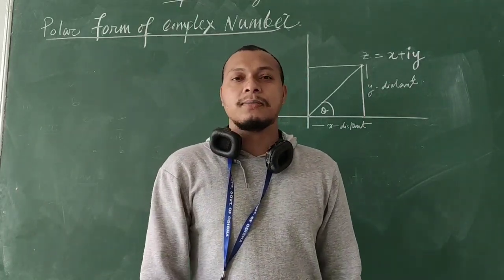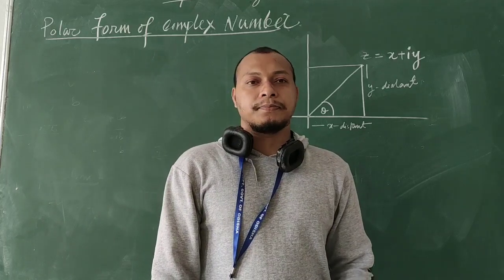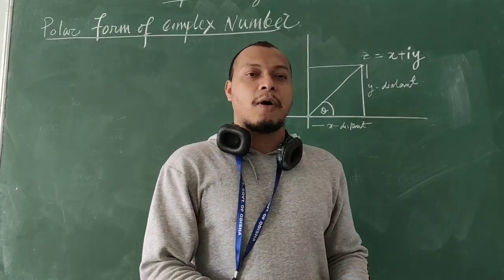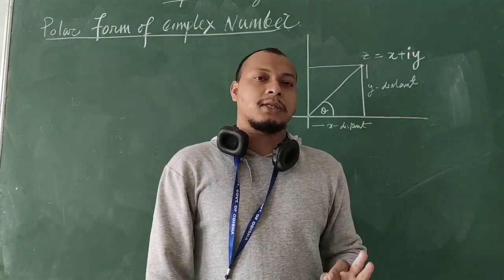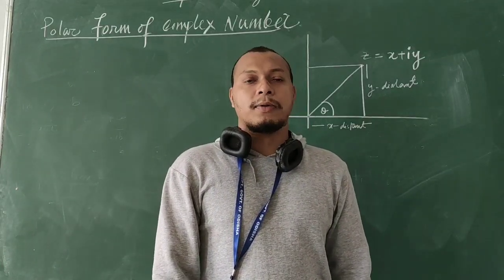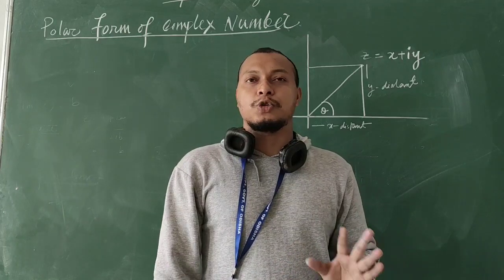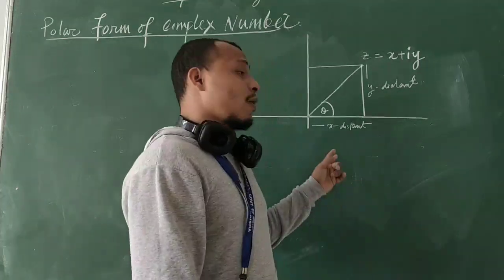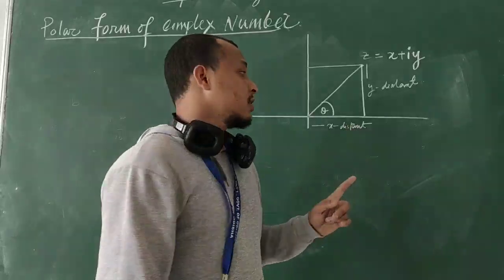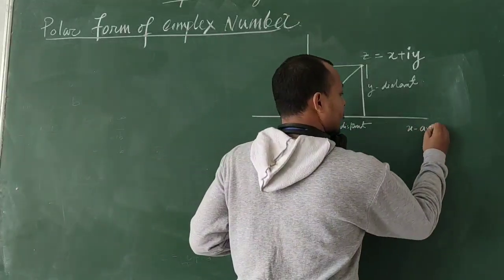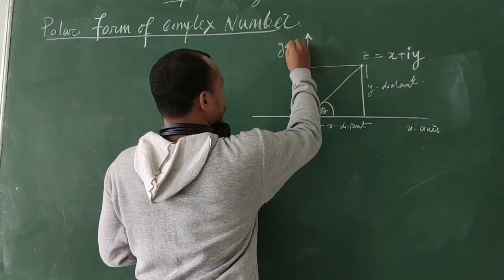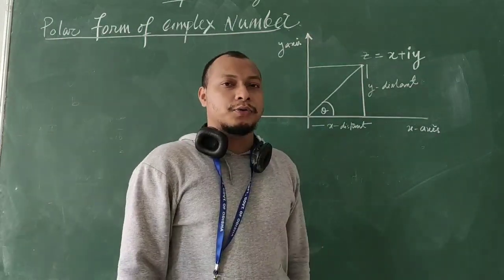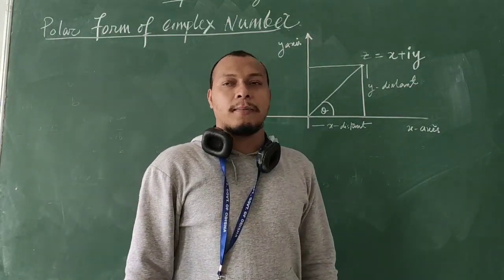In the last class we studied what is a complex number system and how it is related to the Cartesian form. Today we are going to learn the polar form. In a complex number system there are two forms — one is the Cartesian form, which is related to the X and Y axes.